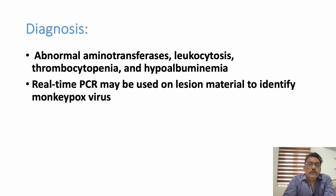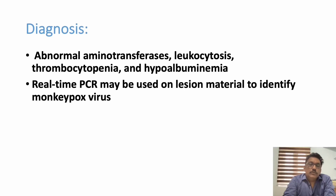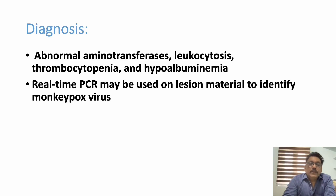In diagnosis, liver function tests show slightly elevated AST and bilirubin. Leukocytosis may indicate secondary skin infection or pneumonia. Thrombocytopenia is seen in most viral illnesses including monkeypox. Hypoalbuminemia indicates vascular leak leading to hypotension and shock. Real-time PCR from infected lesions is the investigation of choice and will confirm the diagnosis of monkeypox.